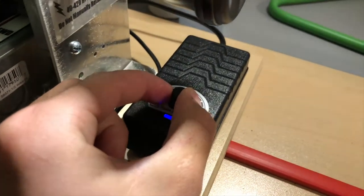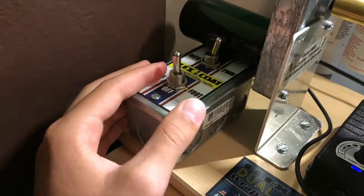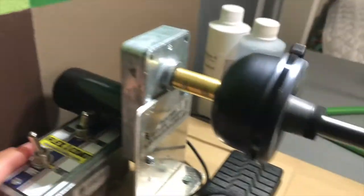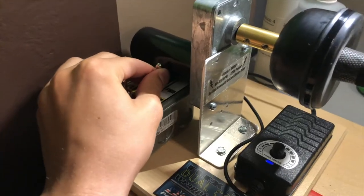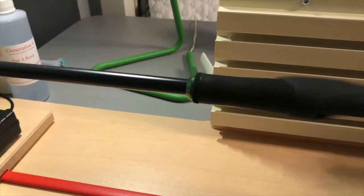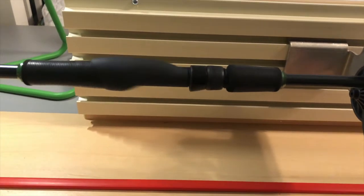First you can dial your speed from 40 to 420 RPM, then you can have it run by itself, and then you can switch either forward or backward, and I can stop this at any time by just grabbing the clutch.